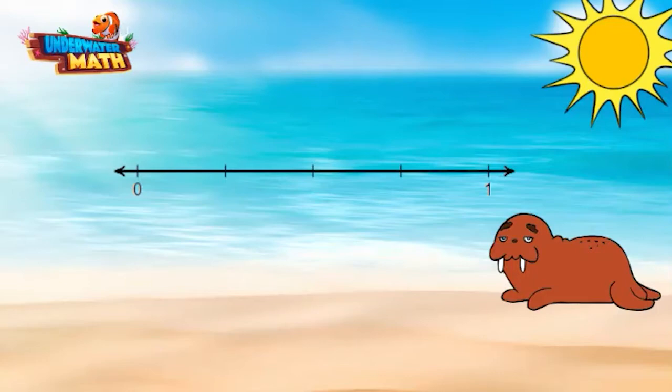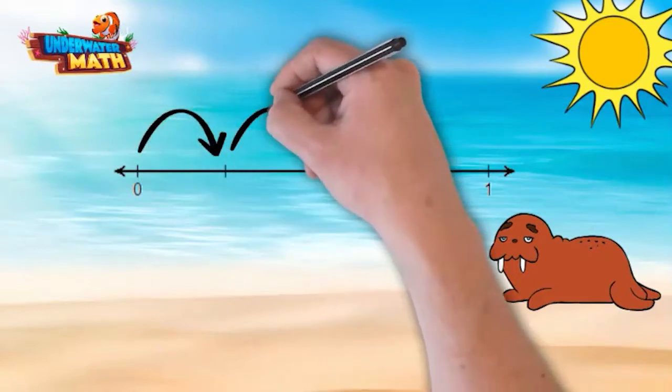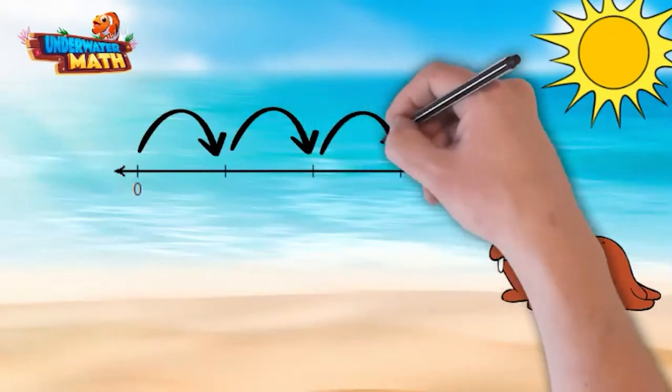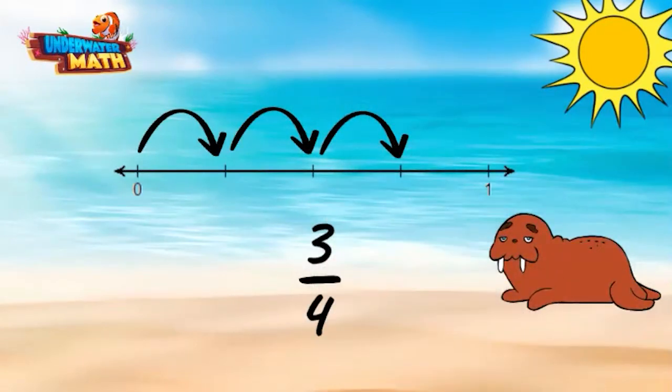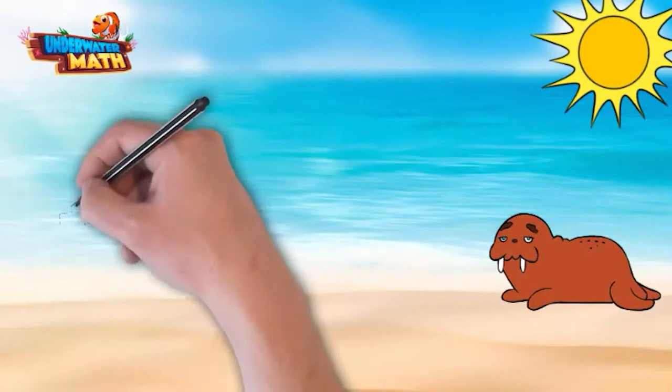This number line shows fourths because there are four equal parts between zero and one. To represent the fraction three-fourths, start at zero and count each section as one-fourth: one-fourth, two-fourths, three-fourths. Our arrow stops on three-fourths and this represents the fraction.